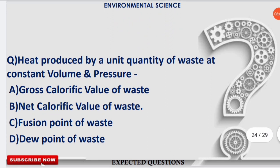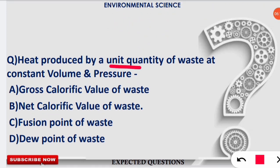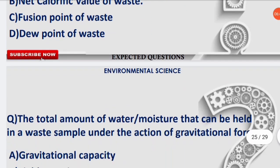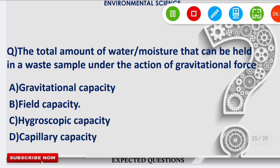The next terminology question asks: heat produced by a unit quantity of waste at constant volume and pressure is known as what? The correct option is net calorific value. Net calorific value of waste is the heat produced by a unit quantity of waste at constant volume and pressure. Note this down in your notes as it is important for the examination.